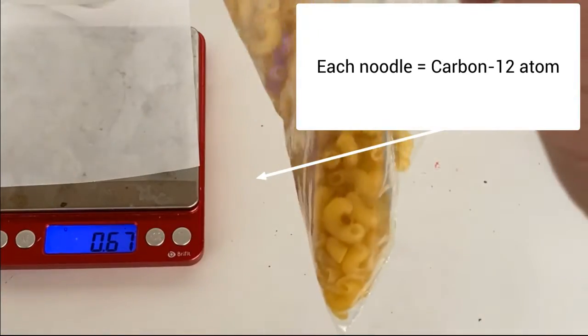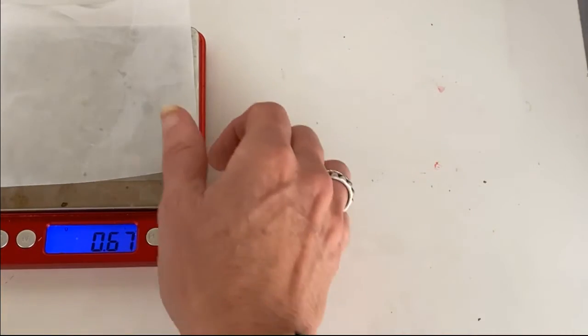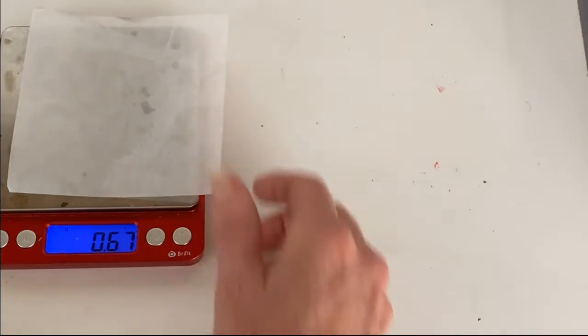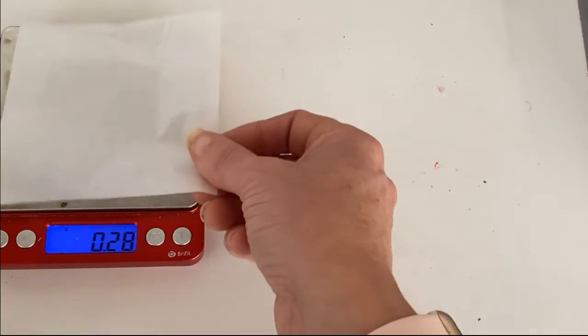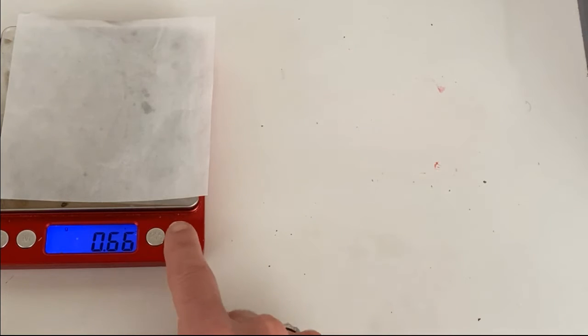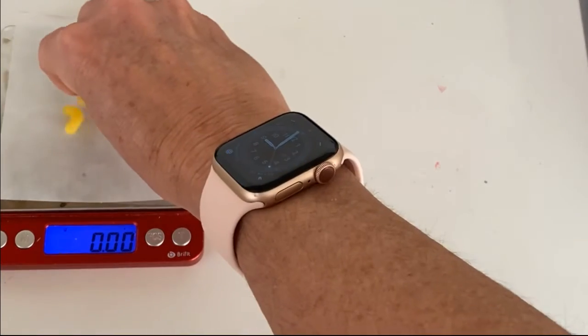You can count them all if you want or you can use some proportional reasoning. So to do that you're going to take the electronic balance. You're going to zero out the weighing paper and you're just going to put a few on the balance.